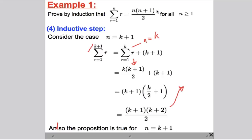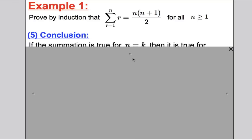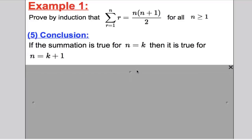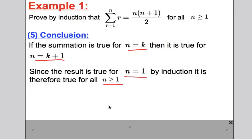So far, we've shown this is true when n = 1, and we've shown that if it is true for n = k, then it must be true for n = k+1. Since we've shown it's true for 1, it must be true for 2, 3, 4, 5, 6, and all the whole numbers. For the conclusion, we state: since it is true for n = 1, by induction, it is true for all numbers n ≥ 1.